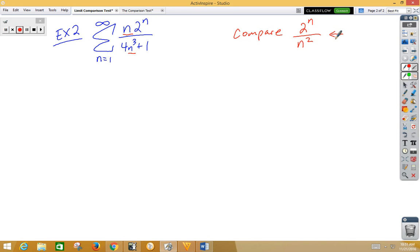So now let's go ahead and set that up. Rho is the limit as n approaches infinity. We've got n times 2 to the n over 4n cubed plus 1, divided by what we're comparing it to, which is 2 to the n over n squared. So let's go ahead and multiply by the reciprocal. So n times 2 to the n over 4n cubed plus 1 times n squared over 2 to the n. Well, the 2 to the n's are going to cross out.